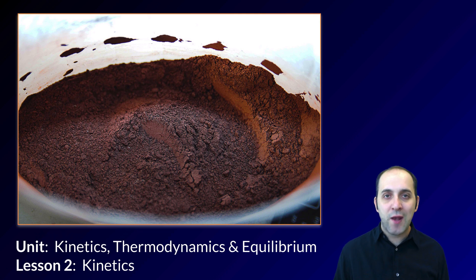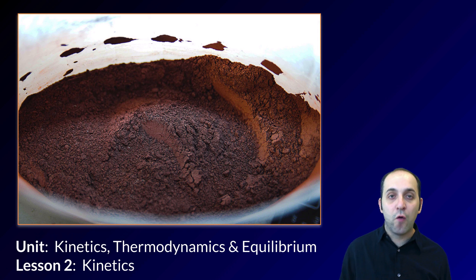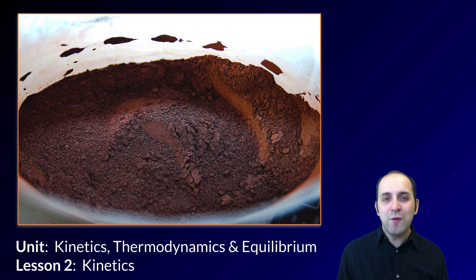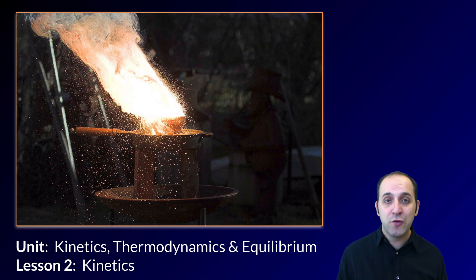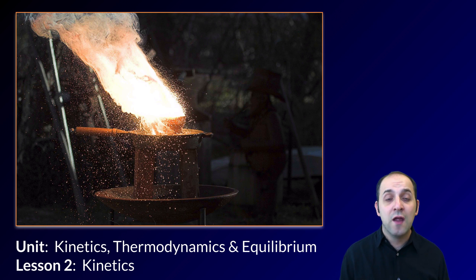Welcome to lesson two in our kinetics, thermodynamics, and equilibrium unit. Lesson two deals with kinetics, which is the study of energy changes that take place over the course of a chemical reaction. This is a picture of thermite — a powdered mixture of iron and aluminum. When thermite contacts a strong oxidizing agent, you get the thermite reaction, one of the hottest chemical reactions we're aware of. It produces a tremendous amount of heat — so hot that the iron melts and pours out as molten iron. That's the kind of thing kinetics deals with: energy absorption and release during chemical reactions.